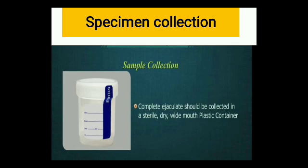Now, specimen collection — how do we collect the specimen? This is very important, because improper collection can lead to a false result. The most important point in semen collection is that the specimen must be complete — that is, complete ejaculation. You have to make sure the patient does not lose any fluid. The container in which the specimen is collected should be dry, clean, sterile, and wide-mouthed.